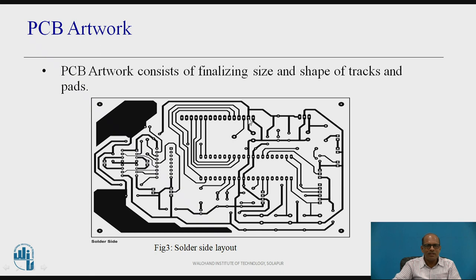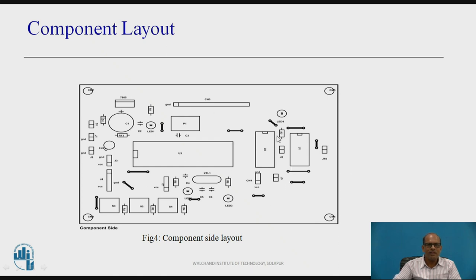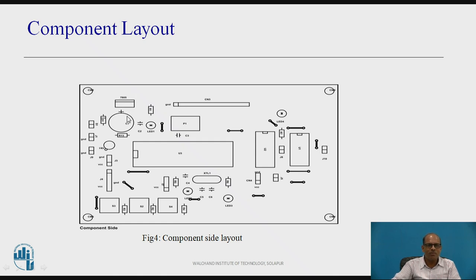Connectors are placed at the end. This is a 40-pin IC placed at the middle, making connections with other components. Here there are three switches. This is the component layout. From the component layout it is clear that connectors requiring input or output connections are placed at the edge of the PCB. These are push buttons; these are connectors. This is the 40-pin IC located at the middle. This is a 7805, a three-terminal IC voltage regulator which generates heat, so an external heat sink can be connected and it should be placed away from other components.